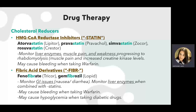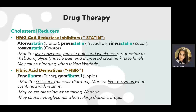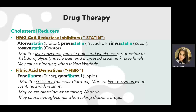Another classification is fibric acid derivatives. You can identify them by 'fibr-' in the middle of the word — like fenofibrate and gemfibrozil. Monitor for GI upset such as nausea and diarrhea, and liver enzymes when taken with statins. They can also cause bleeding when taking anticoagulants, and they can cause hypoglycemia when taken with diabetic drugs.